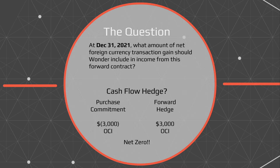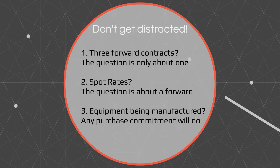Now let's look at a few things that make this problem difficult. First, they ask you about three forward contracts when the question is only about one. They're trying to distract you so that maybe you'll multiply by three by mistake, or think it's not a valid hedge because of the other two contracts — neither of which is true. We just focus on the one forward exchange contract they're asking about. They also provide spot rates in the question that we never use, since the question is only about the forward and the change in its value.